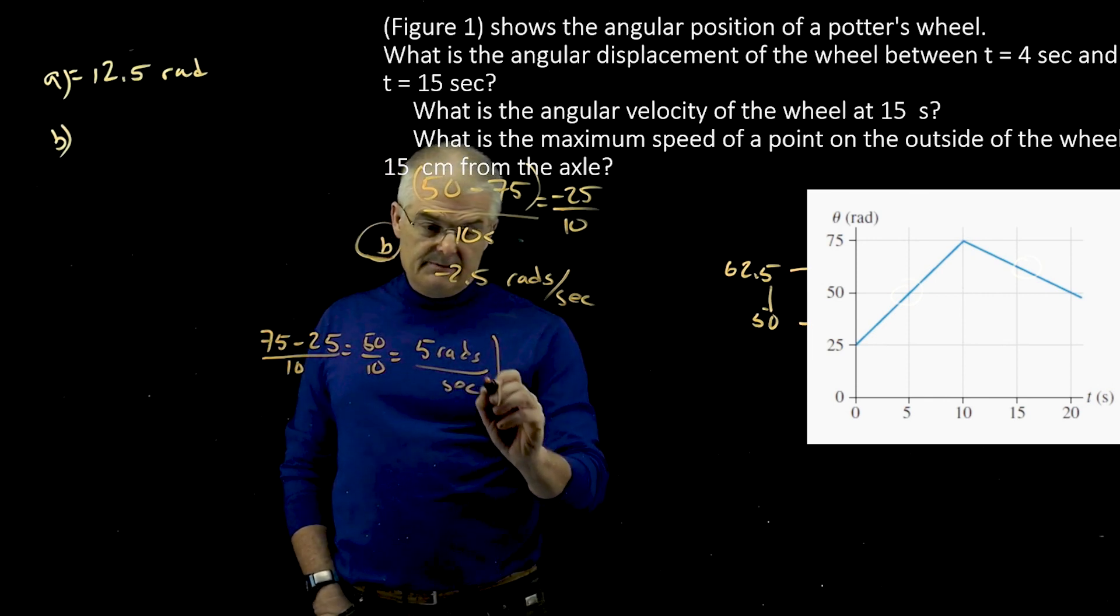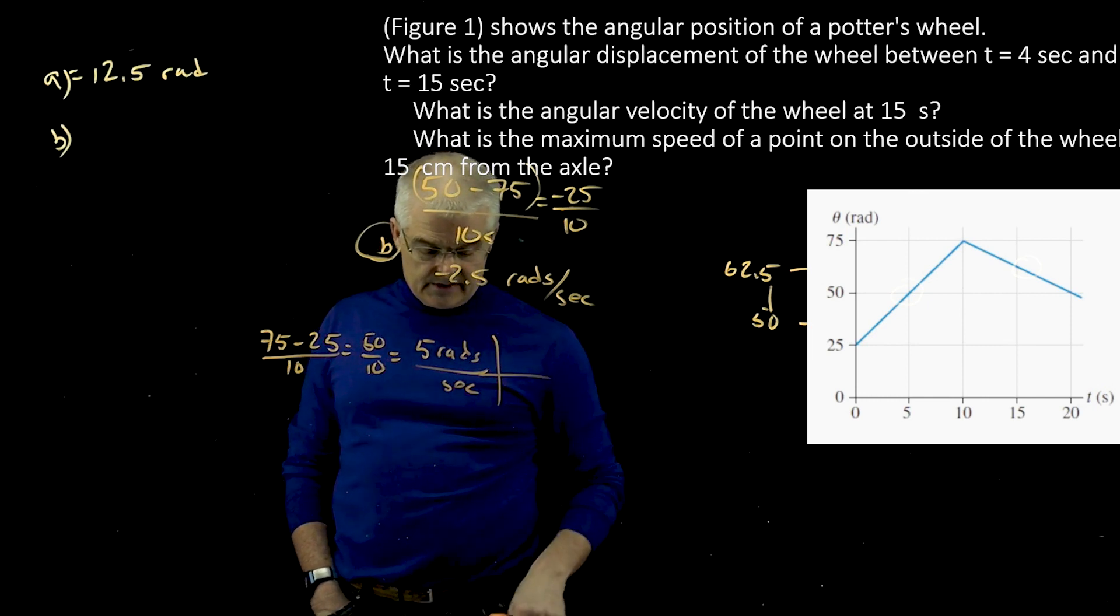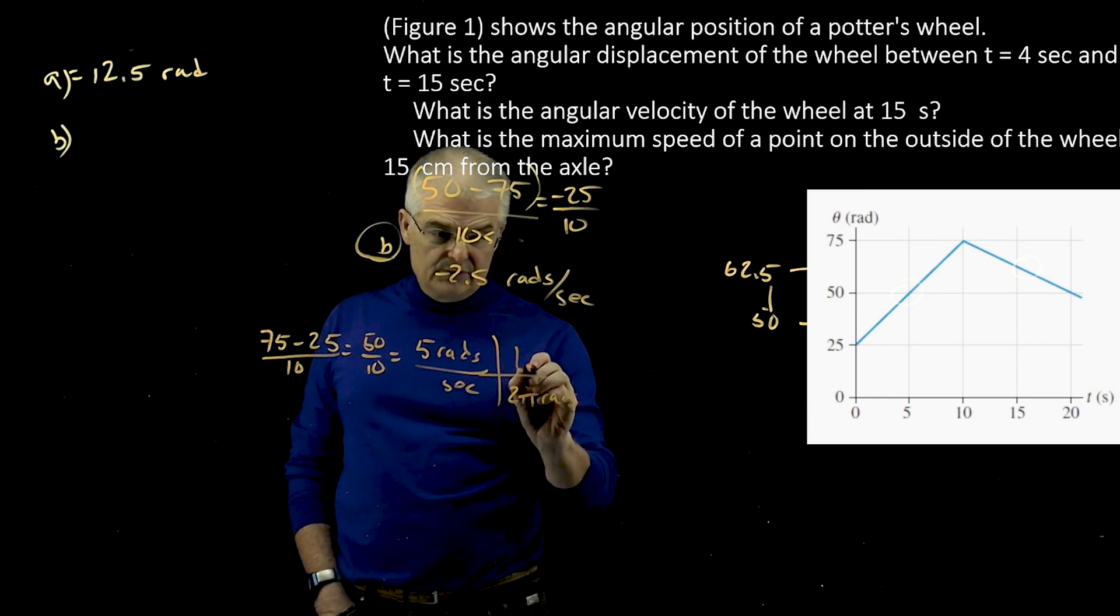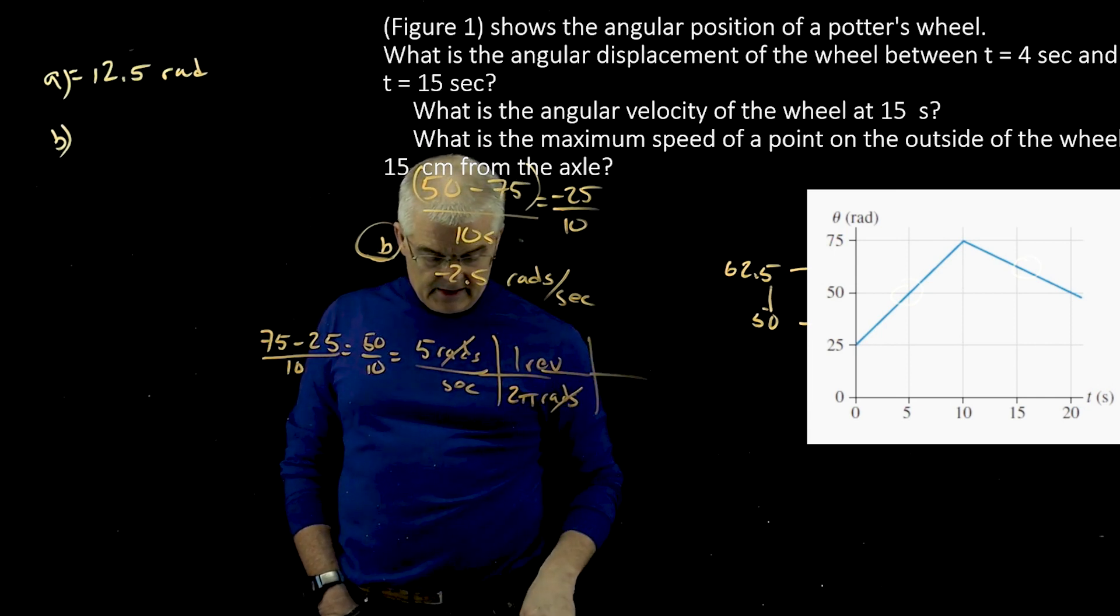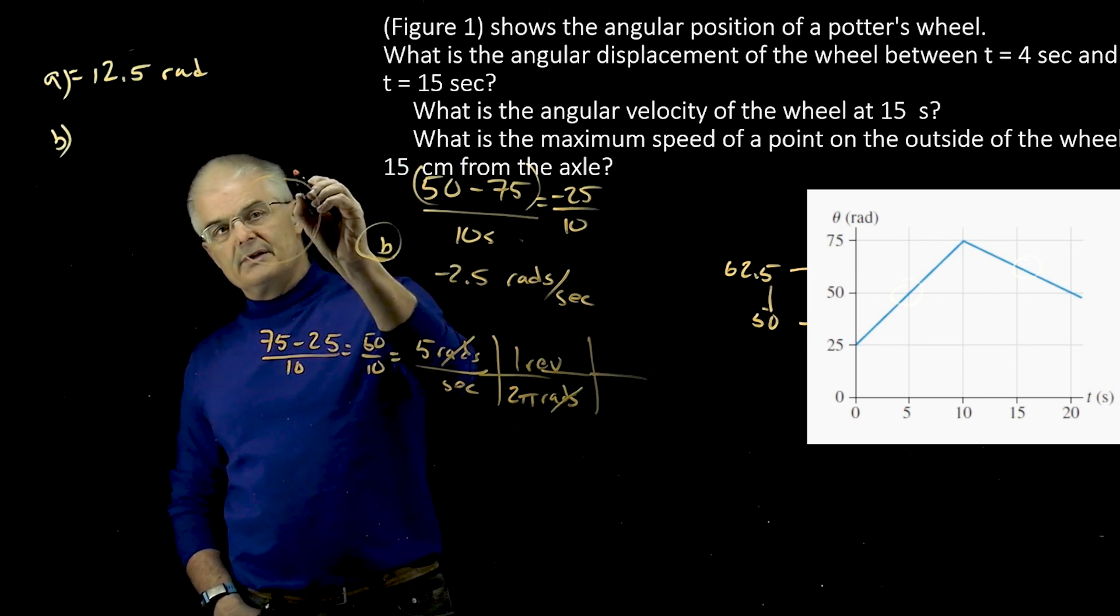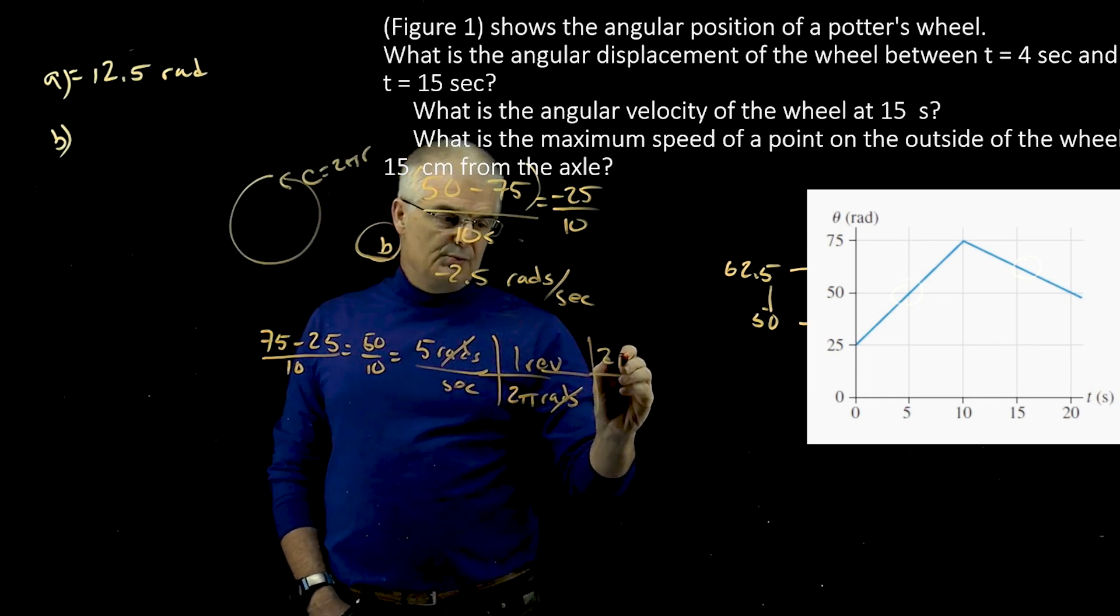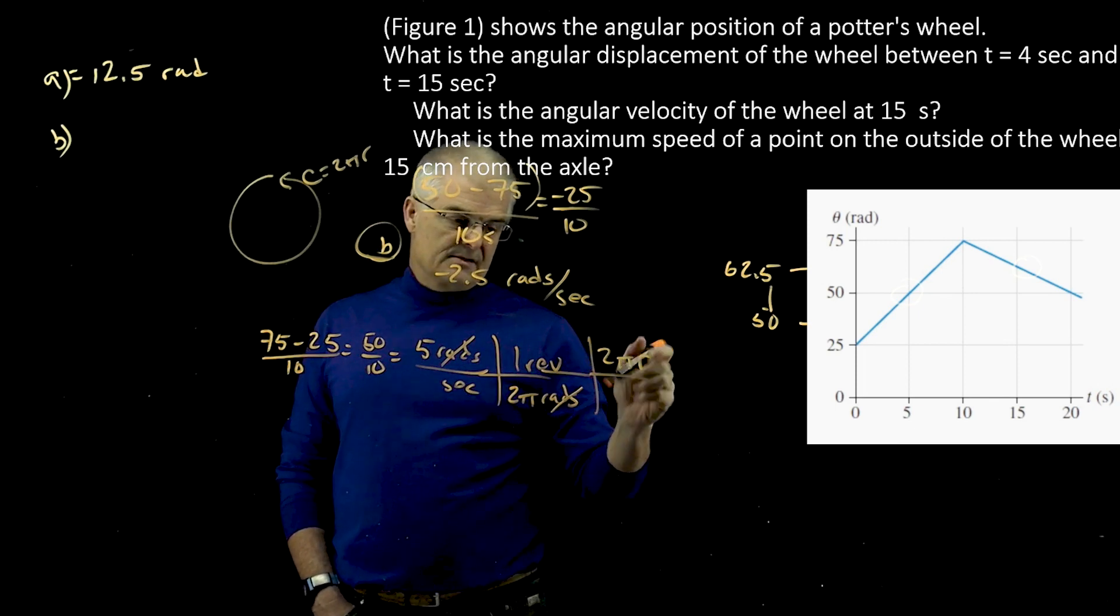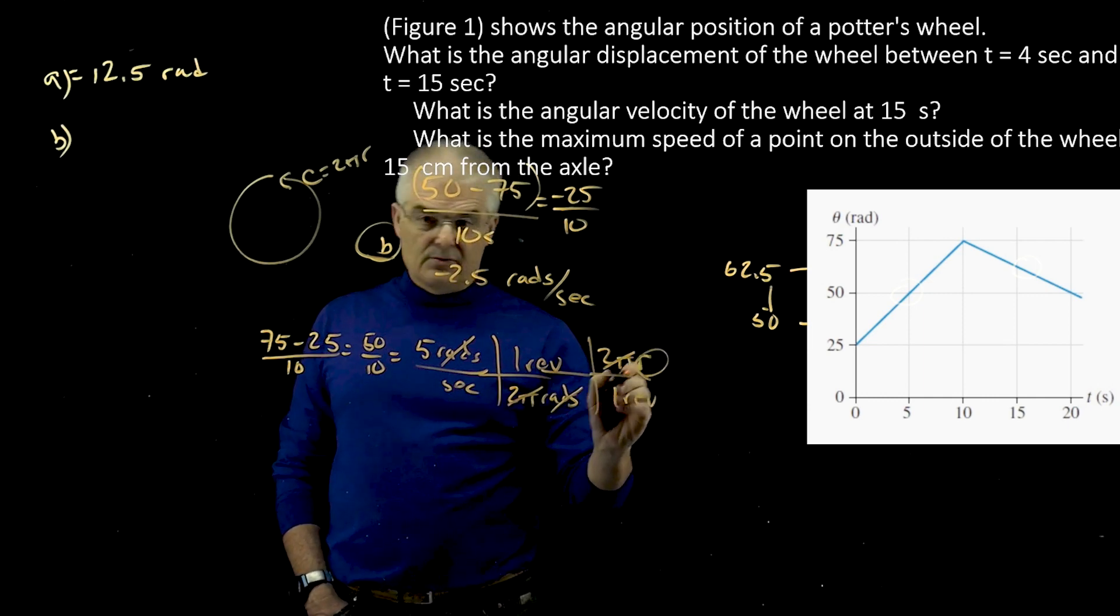And I've got to convert rads per second into meters per second. And so I said there's 2 pi rads in one revolution, so my rads cancel. And I can say in a circumference, how far have they traveled in a circle? The circumference C is 2 pi r, so there's 2 pi r distance in one revolution. I don't know if you realize this, but the 2 pi is canceled. And this is the radius, and they gave us the radius.